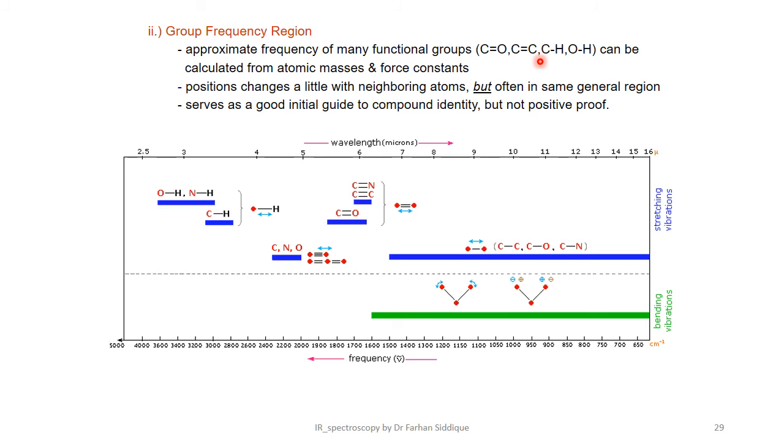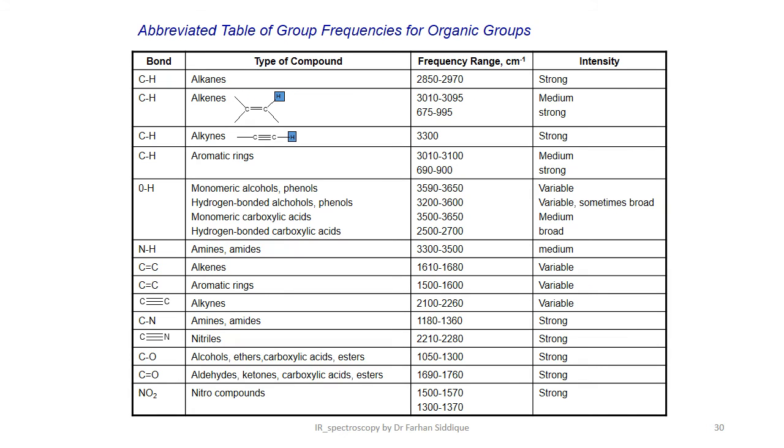These can be calculated from atomic mass and force constant. Also this figure shows which region shows different types of bonds, where is C-C, C=C and C≡C, and the regions with the binding of hydrogen. This table tells us about the frequency range of different intensities for different types of compounds.